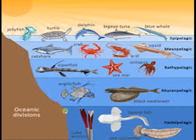Some examples of animals which live on the surface of the water: Dolphins, blue whale, jellyfish, etc.